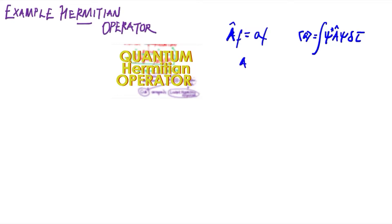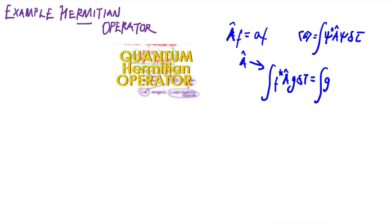Building on that, for A to be a Hermitian operator rather than just any operator, it must satisfy specific restrictions. The defining condition is: the integral of f* (a complex conjugate wave function) times the operator A acting on g over all space, must equal the integral of g times (A acting on f)* over all space.